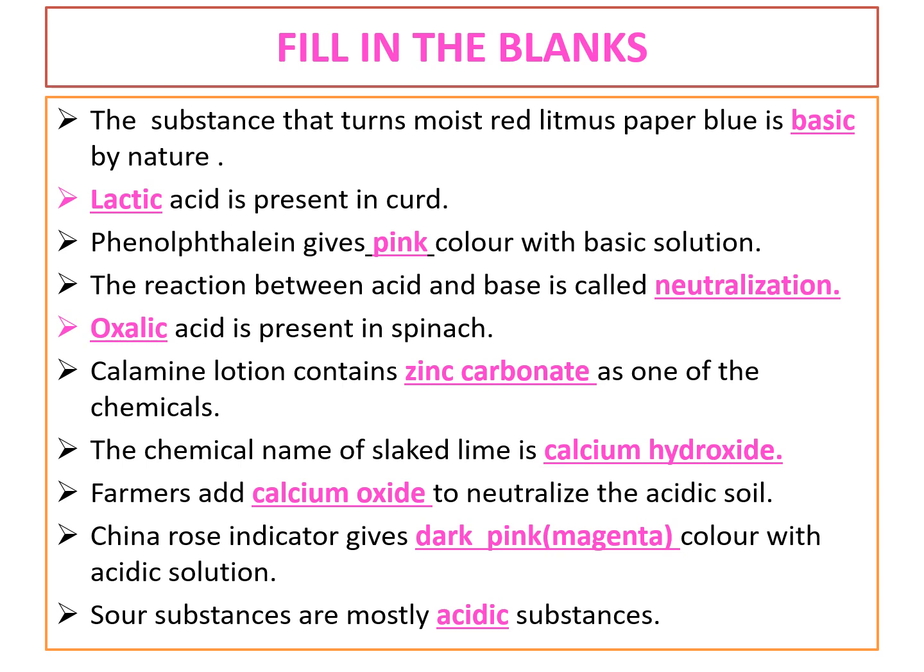China rose indicator gives dark pink or magenta color with acidic solution. Next, sour substances are mostly acidic substances. We have already learned about the properties of acid — acids are sour in taste. That means sour substances are mostly acidic substances.